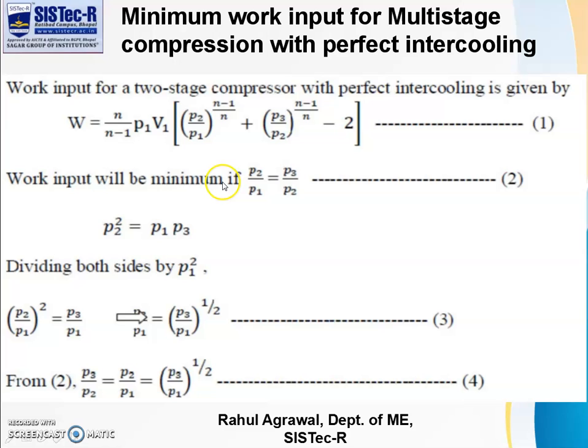Work input is minimum when P2 = √(P1×P3). The intermediate pressure is the geometric mean of P1 and P3. So P2² = P1P3. Dividing both sides by P1², we get (P2/P1)² = P3/P1, which means P2/P1 = (P3/P1)^(1/2). From this, P2/P1 = P3/P2 = (P3/P1)^(1/2).